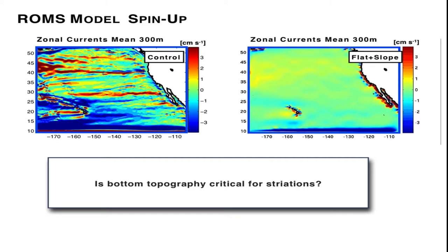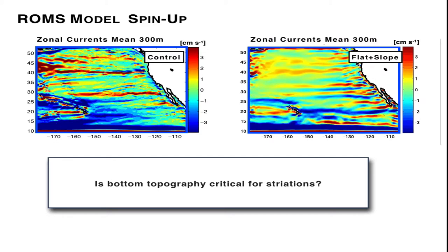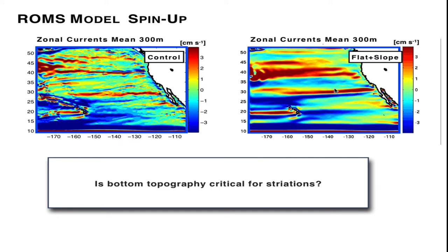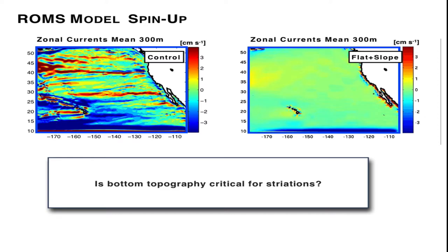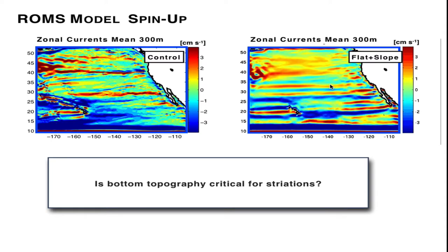Let's look at the spin-up movie for this particular experiment. We see that the striations continue to develop. They seem to develop from the eastern boundary into the interior. They draw their energy from the eastern boundary. You can see it very clearly here. This is the instability of the eastern boundary, and then they develop in the interior.